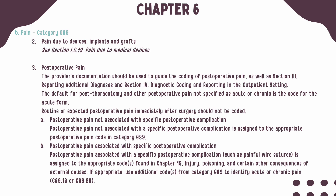If you are coding for pain due to devices, implants, or grafts, you should see Chapter 19 guidelines for pain due to medical devices. If the post-thoracotomy or other post-op pain is not specified as acute or chronic, it should be coded to the acute form. Any routine or expected post-op pain immediately after a procedure should not be coded. If the post-operative pain is not associated with a specific post-op procedure complication, then you can assign a code from Category G89. If the post-op pain is associated with a specific post-op complication, then you should assign a code from Chapter 19, and if appropriate, a Category G89 code can be assigned to identify acute or chronic pain.